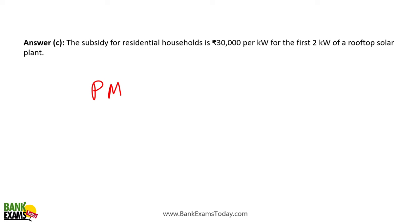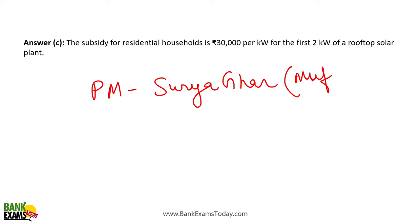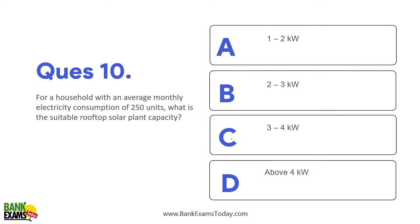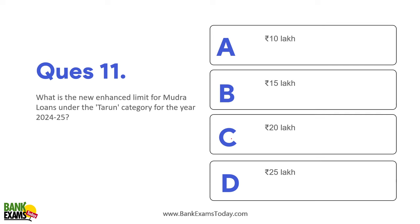The name of the scheme is PM Surya Ghar Muft Bijli. On the first two kilowatts, ₹30,000 per kilowatt subsidy is provided. The maximum subsidy that one family can get is ₹78,000 — for a household with an average monthly electricity consumption of 250 units, a 2-to-3 kilowatt rooftop solar system is sufficient.